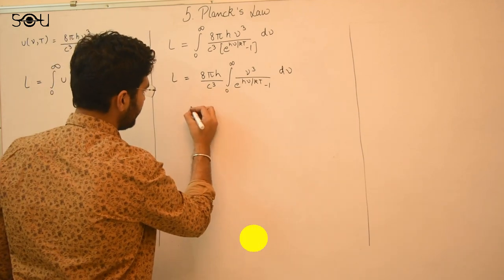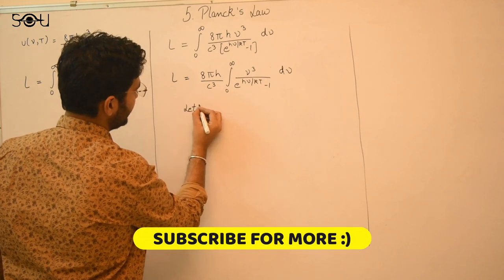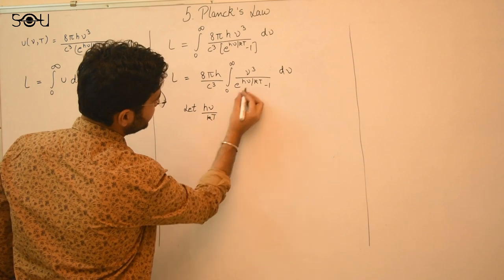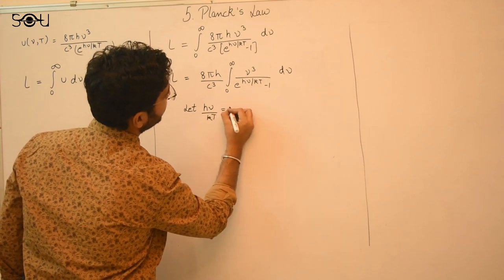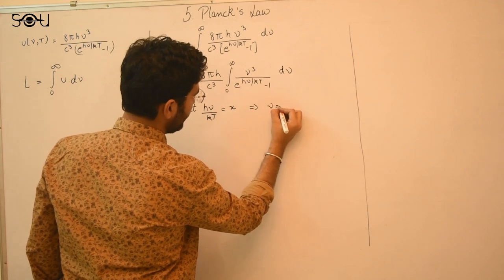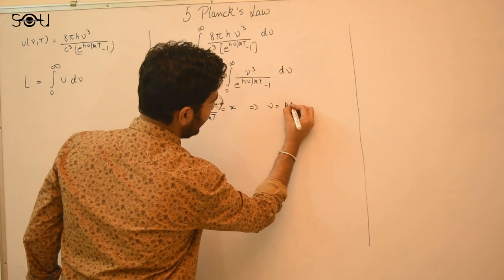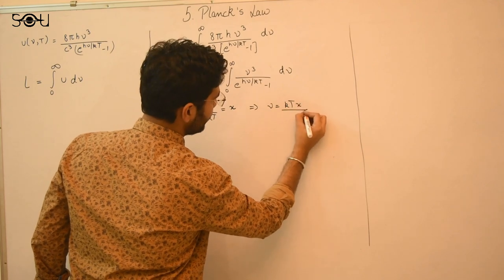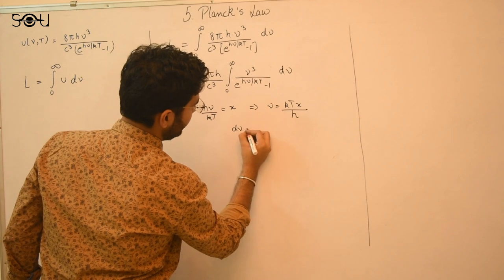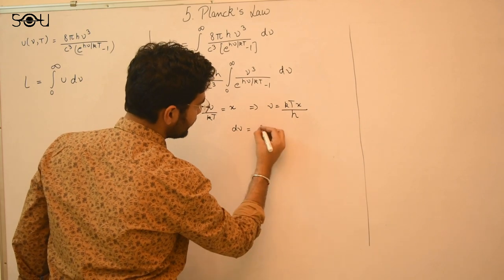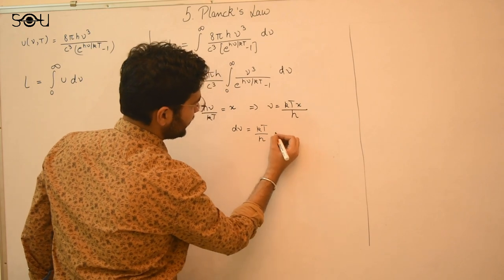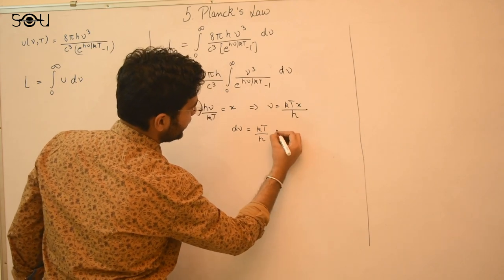Let x = hν/kT. From this substitution, ν becomes kTx/h, and taking the derivative, dν becomes kT/h · dx, since k, T, and h are constants.